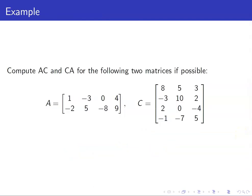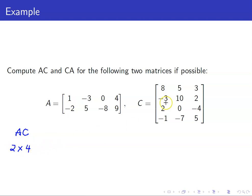Let us compute AC and CA for the following two matrices if possible. From the definition, it's not always the case that the product is defined — you need the number of columns of A to equal the number of rows of the second matrix. For AC, A is a 2 by 4 matrix whereas C is 4 by 3. These match, so therefore the product AC is a 2 by 3 matrix.